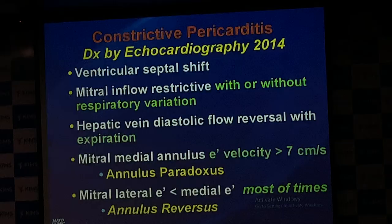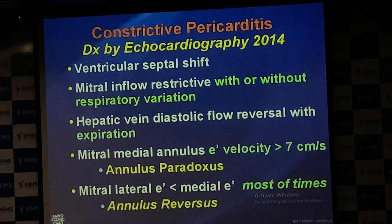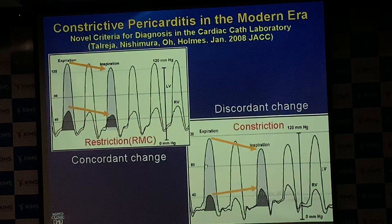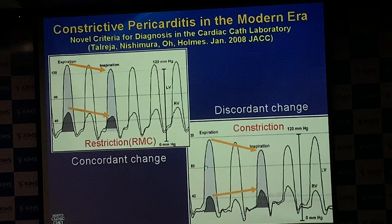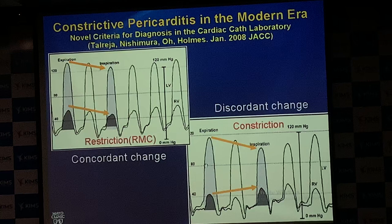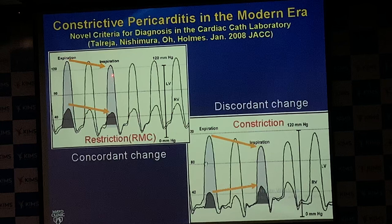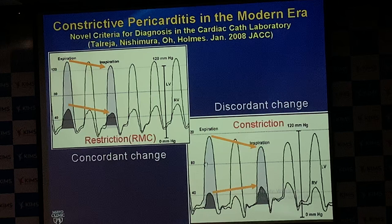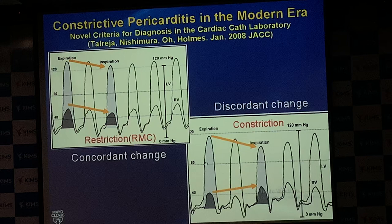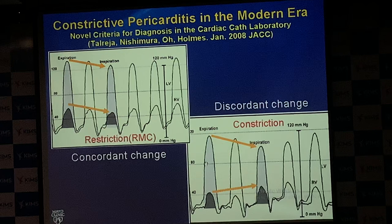This summary from the Mayo Clinic shows the systolic area change demonstrating ventricular interdependence: the ratio of systolic area of RV to LV during inspiration versus expiration — if more than 1.1, it is considered 100% diagnostic of constrictive pericarditis, with 100% specificity, 97% sensitivity, and 95% negative predictive accuracy. Though invasive cardiac catheterization for constrictive pericarditis is rarely done these days.